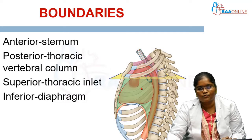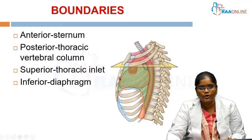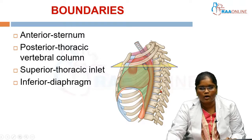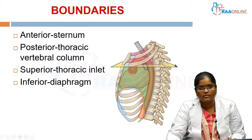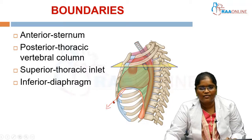Let us look at the boundaries of the mediastinum. Anteriorly it is bounded by the sternum, which consists of the manubrium sterni above, the body of the sternum, and the xiphisternum in the lower part. Posteriorly, it is bounded by the thoracic vertebral column — there are around 12 thoracic vertebrae. Superiorly, it is bounded by the thoracic inlet, and inferiorly it is bounded by the diaphragm, shown here as the brown colored line marking the diaphragm muscle.